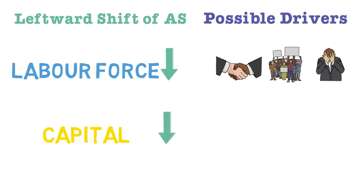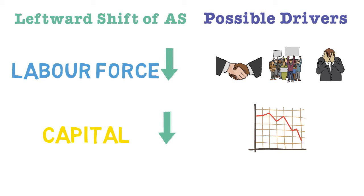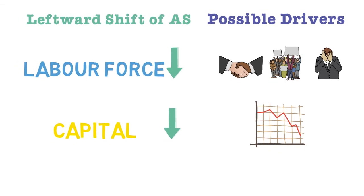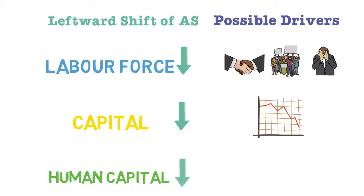If the physical infrastructure of the economy were to degrade and deteriorate over time, we would see a leftward shift of aggregate supply. This could happen if there was a recession and the government and companies decided to invest less in their infrastructure and capital over time. Human capital degrading would also produce a negative shock to aggregate supply.